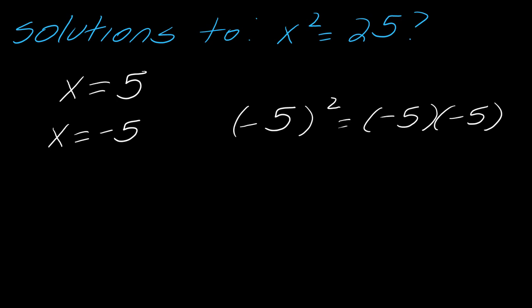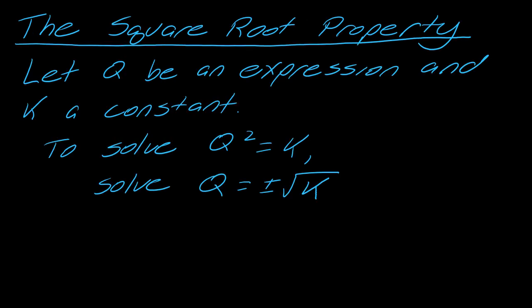This kind of illustrates what the square root property is. So the square root property: let q be an expression and k a constant. If you want to solve something like this, you're actually going to take the square root, but you have to take plus or minus that square root. That's kind of the idea behind this. Notice q can actually be an expression, this can stand for something larger, but this has to actually be a number ideally. So let's go ahead and play around with this.